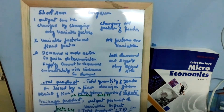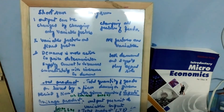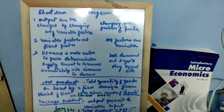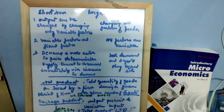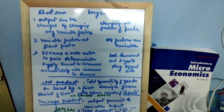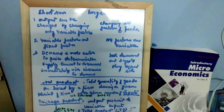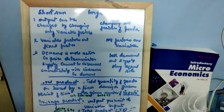So these are the points regarding short run and long run — we have seen short run, long run, variable factors, and fixed factors. Now let's see what is total product. Total product is the total quantity of goods produced by a firm during a given period of time with a given number of inputs. For example, 10 laborers making 60 kg of rice — so the total product is 60 kg.